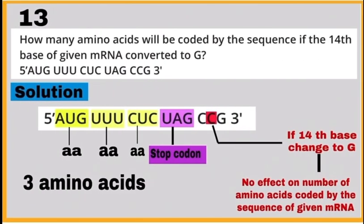Similarly, in question number 13, if the 14th position base is changed, there will not be any effect on the number of amino acids coded by the sequence of given messenger RNA because stop codon UAG is present before this change.